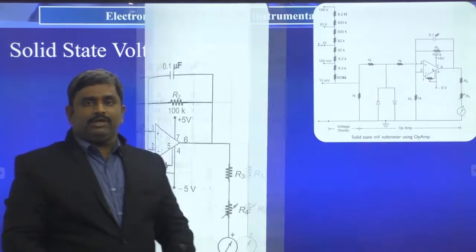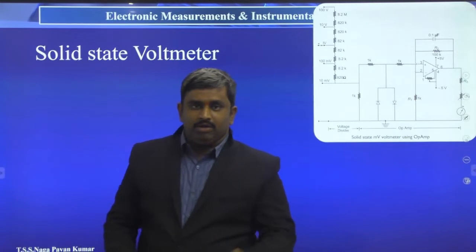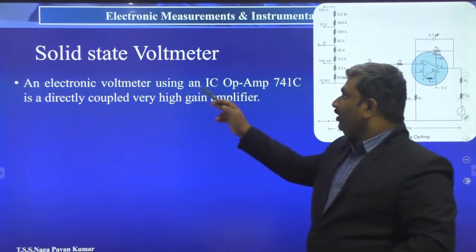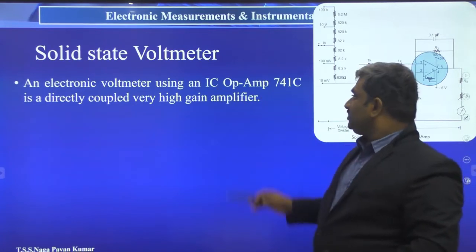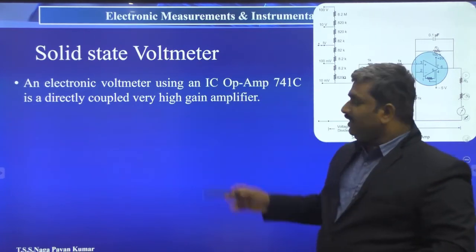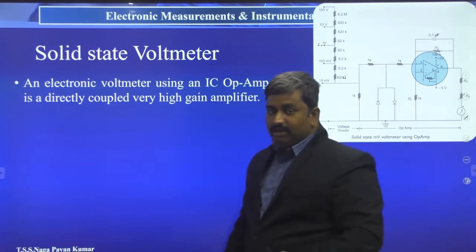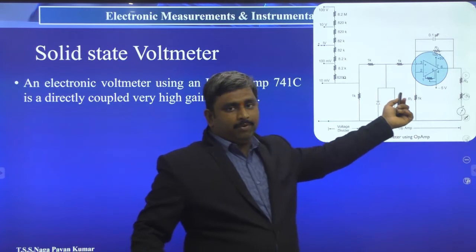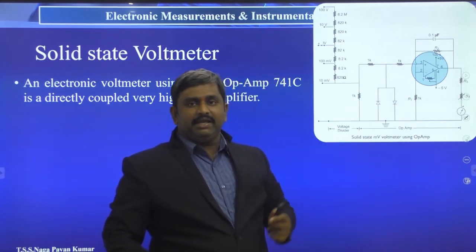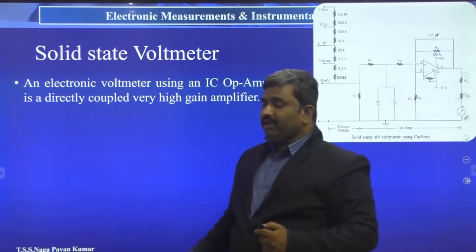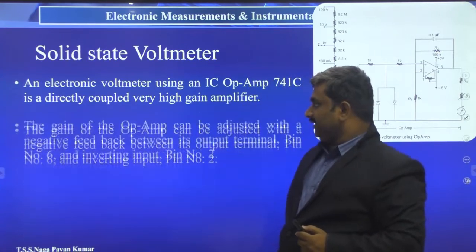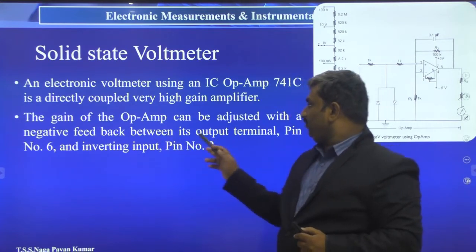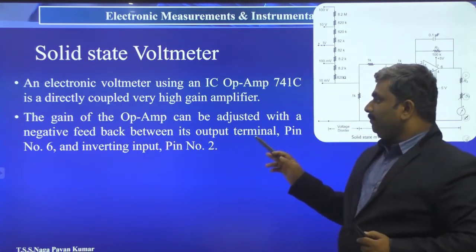An electronic voltmeter using IC op-amp 741C, which is a directly coupled, very high gain amplifier. The IC741 op-amp used in this solid state voltmeter is fundamentally a high gain amplifier. There is no need to manually adjust the gain — it can be set using a negative feedback between output terminal pin 6 and the inverting input.